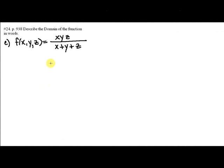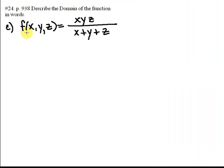Continuing with number 24 on page 938, we're again going to describe the domain of the function in words. And in part c, we're given a new situation. We're given a three variable function. f of x, y, z equals x, y, z over x plus y plus z.